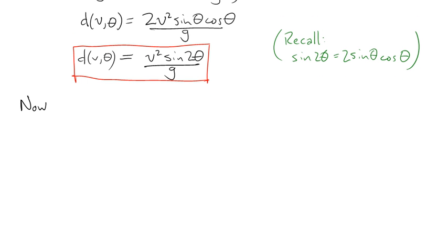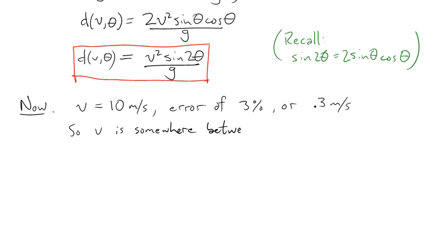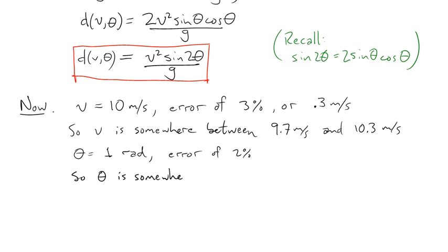So now let's turn to the problem at hand. And we'll suppose that v is measured as ten meters per second with a possible error of three percent, which amounts to 0.3 meters per second. So that means v is somewhere between 9.7 meters per second and 10.3 meters per second. Similarly, theta is measured as one radian with an error of two percent. So theta is somewhere between 0.98 radians and 1.02 radians.